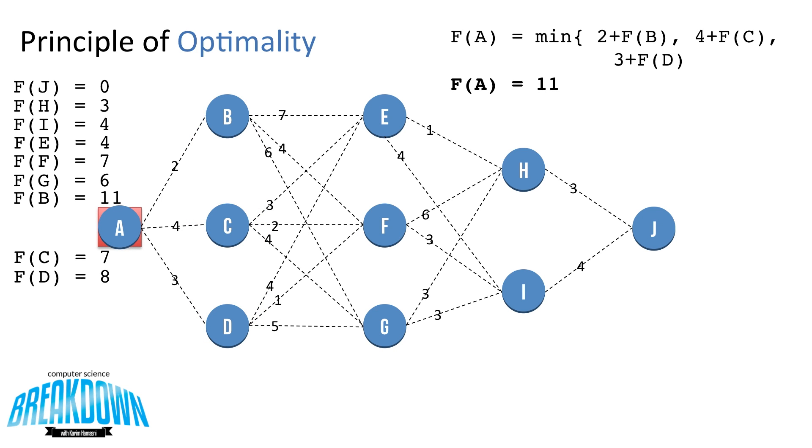Finally, we're at node A. Using the distances that we've calculated for f of B, f of C, and f of D, we can now calculate the total cost of the path from A to J. In this case, we found out that it's 11.